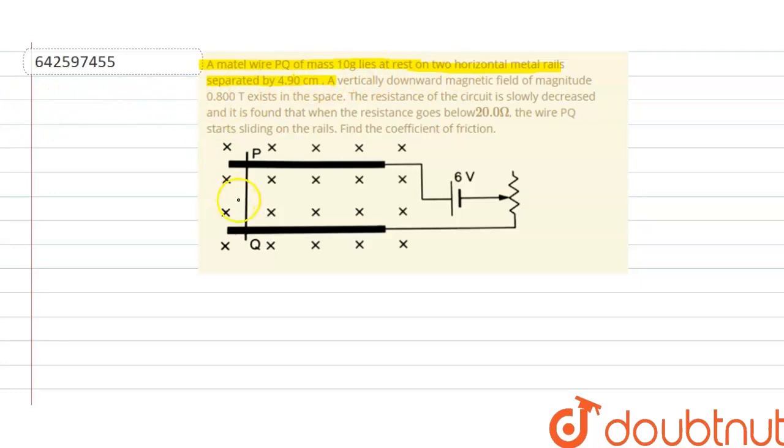So what is given to us is that it is a metal wire which is PQ. It lies on two metal rails and the separation between the metal rails is given to us. So this separation is 4.9 cm.